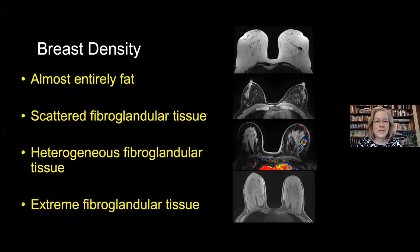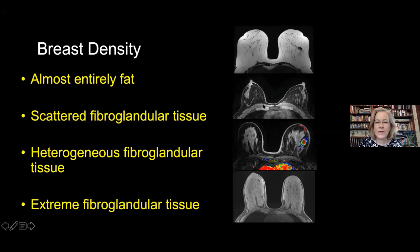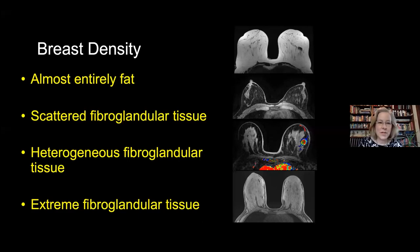Starting with breast density on MRI: you can see the tissue patterns are very comparable to the four mammography categories. Almost entirely fat, scattered fibroglandular tissue, heterogeneous fibroglandular tissue (heterogeneously dense on mammography), and extreme fibroglandular tissue (extremely dense category). This should be very translatable for anybody doing breast imaging on a regular basis.